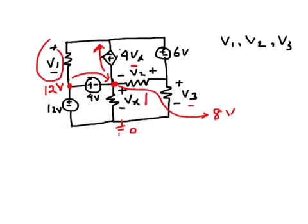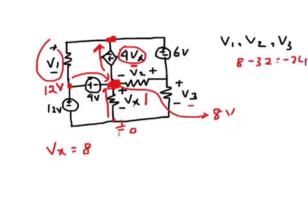The drop is 4Vx. Since this point is 8 volts and this is ground, Vx must be 8 volts — from 0 to Vx is a rise, and this point is 8 volts. So the drop is 4 times 8, which is 32 volts. Therefore, if this point is 8 volts, this other point will be 8 minus 32, which is minus 24 volts.